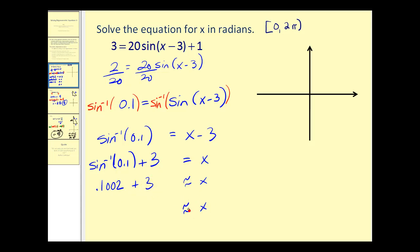So x will be approximately 0.1002 plus 3, which gives us an x value of approximately 3.1002. Now we have to be careful because we're not done.